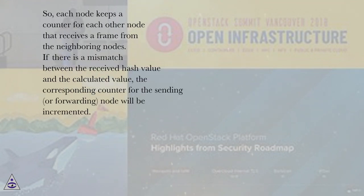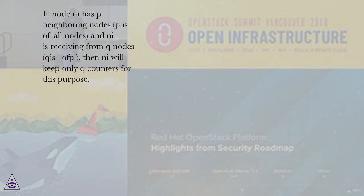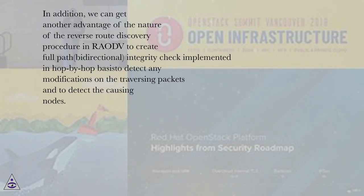The criteria for each node to add another node's address to its blacklist is the repetitive mismatch in the hash value of received frames — layer 2 frames — from the same neighboring node. Each node keeps a counter for each other node it receives a frame from. If there is a mismatch between the received hash value and the calculated value, the corresponding counter for the sending or forwarding node will be incremented. When the counter reaches some threshold value, mal_pckt_threshold, the corresponding neighboring node will be blacklisted. Each node keeps a small number of counters: if node n has p neighboring nodes and is receiving from q nodes, then n will keep only q counters. We can also leverage the reverse route discovery procedure in RAID to create a full path bidirectional integrity check, implemented hop by hop, to detect any modifications on traversing packets and identify the causing nodes.